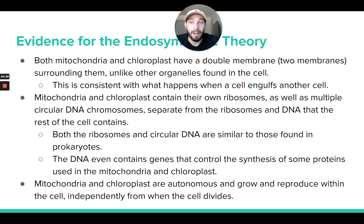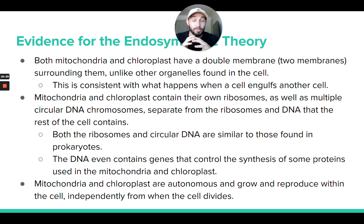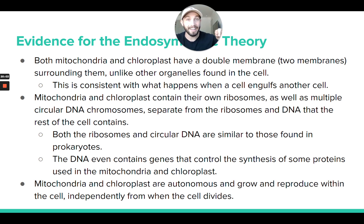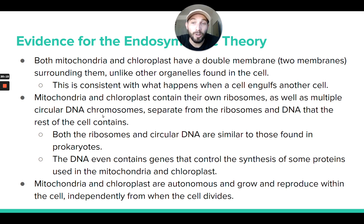Second, mitochondria and chloroplasts have their own ribosomes, separate from the cell's ribosomes. Inside the mitochondria and chloroplast, they build their own proteins using their own ribosomes. Remarkably, those ribosomes are structurally much more similar to prokaryotic ribosomes than to the eukaryotic ribosomes elsewhere in the same cell.